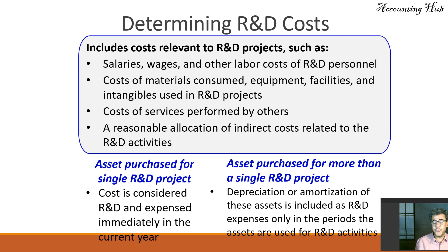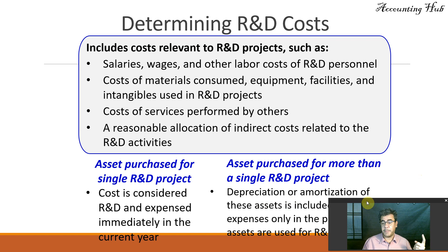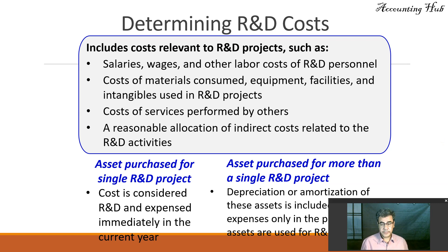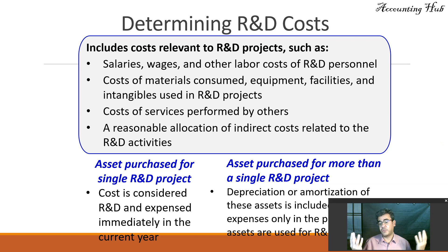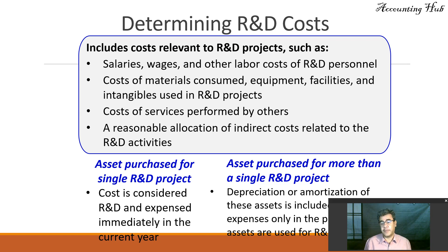For instance, if the asset is used for two projects at the same time, we need to allocate the depreciation based on any cost driver — such as the number of hours that each R&D project uses. Or if equipment is purchased for an R&D project and for general use, again we need to allocate the cost to our project based on some cost driver.